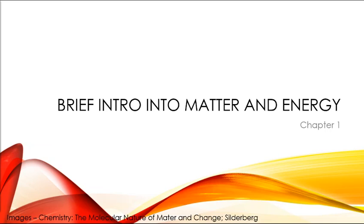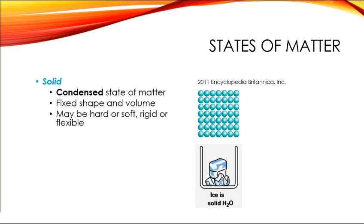Most of these concepts shouldn't be brand new to you, but maybe it's been a while since you've discussed them. So the first thing we're going to talk about is the states of matter. In chemistry we generally talk about three states of matter: solid, liquid, and gas. I want to make sure you understand what they mean in terms of the atoms and how they're situated.